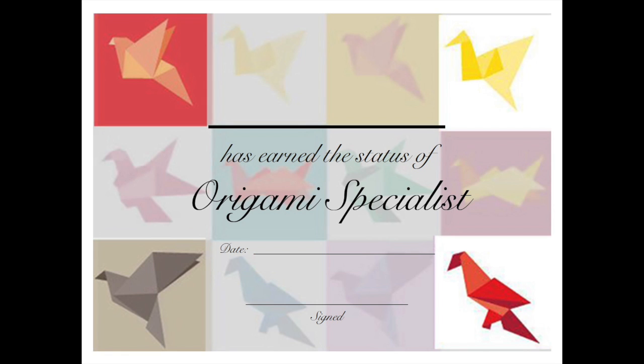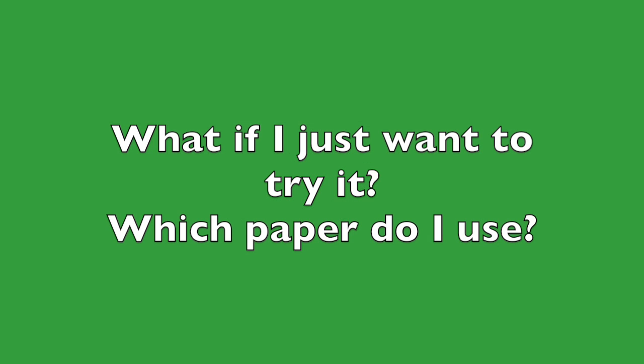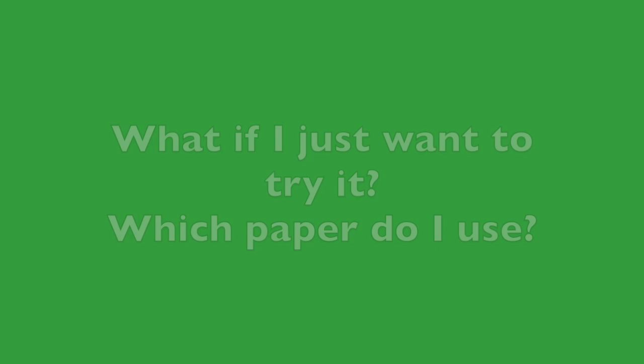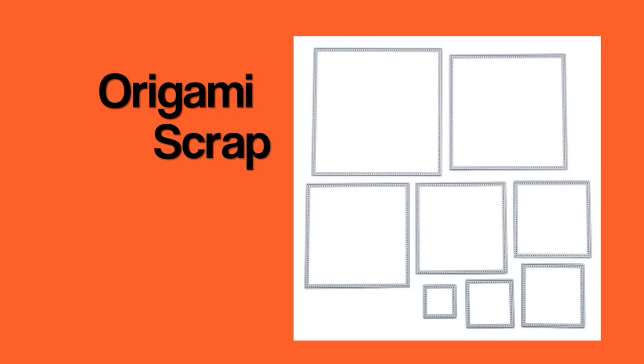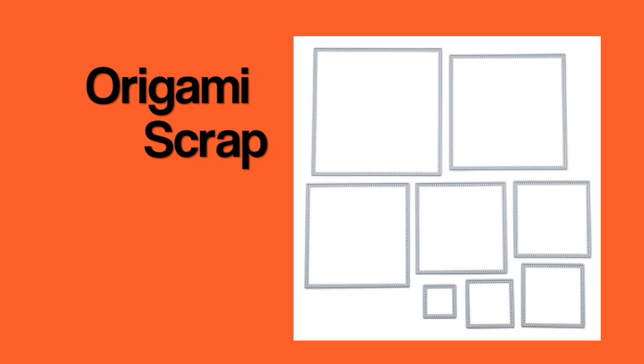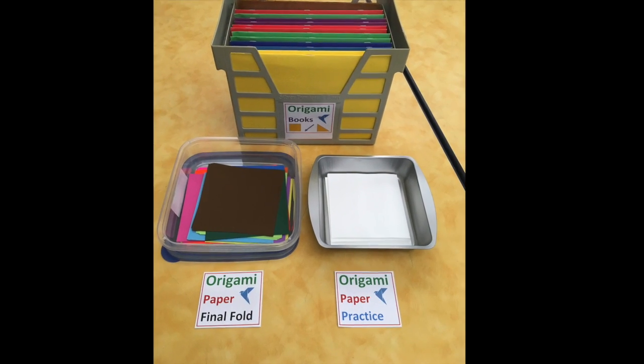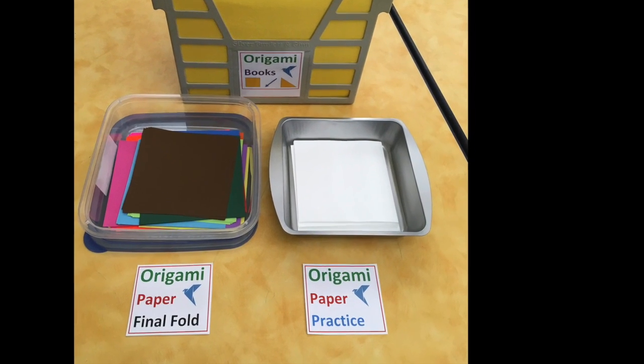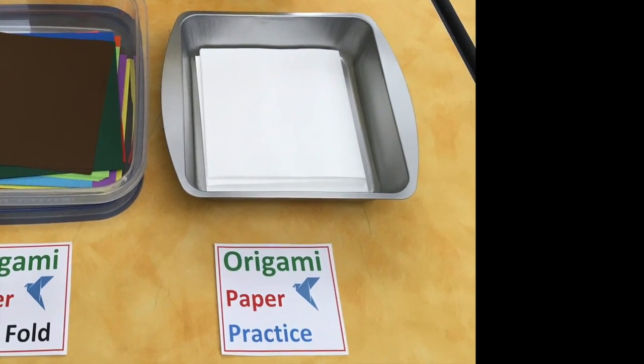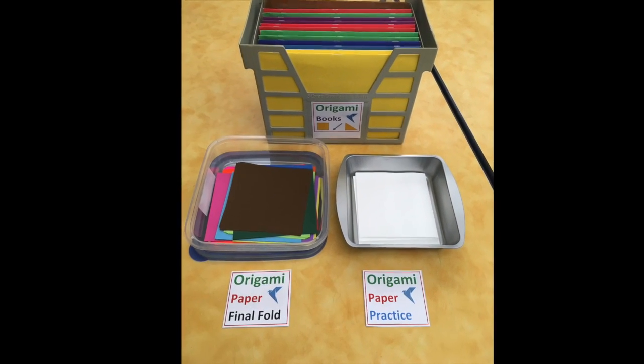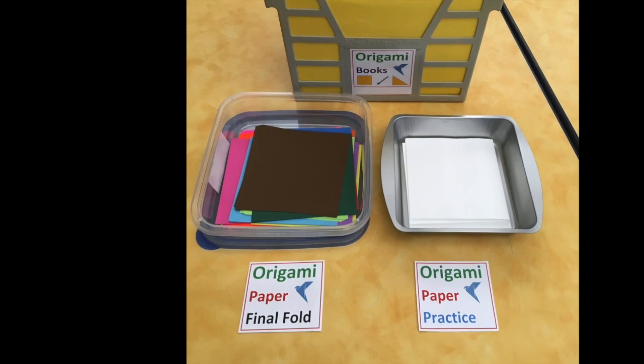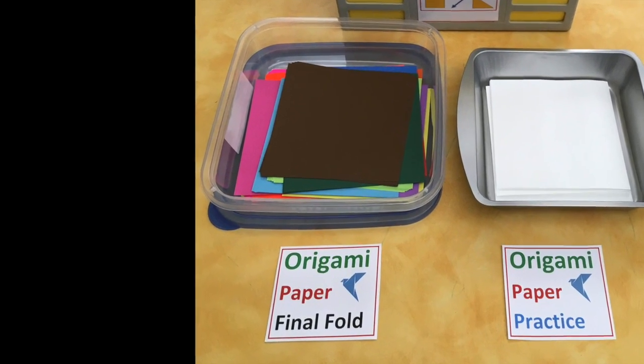Here's the origami specialist certificate—looks pretty cool. What paper do I use if I just want to try it? The orange label box with scrap paper. If you're working on certificate models, you may use origami practice paper. Earning your certificate allows you to use colored paper for final folds.